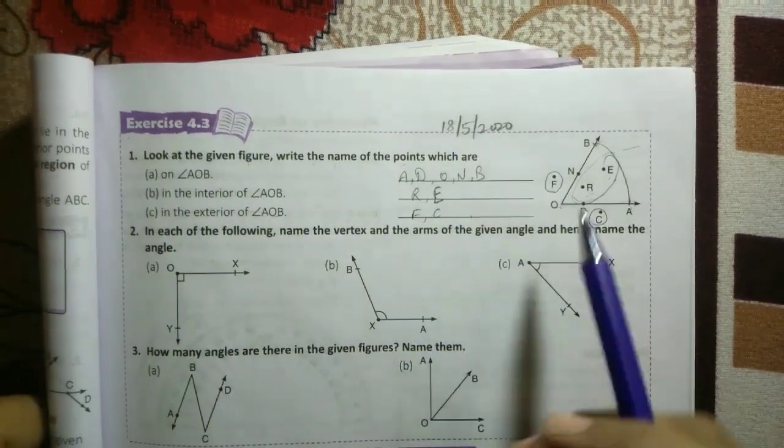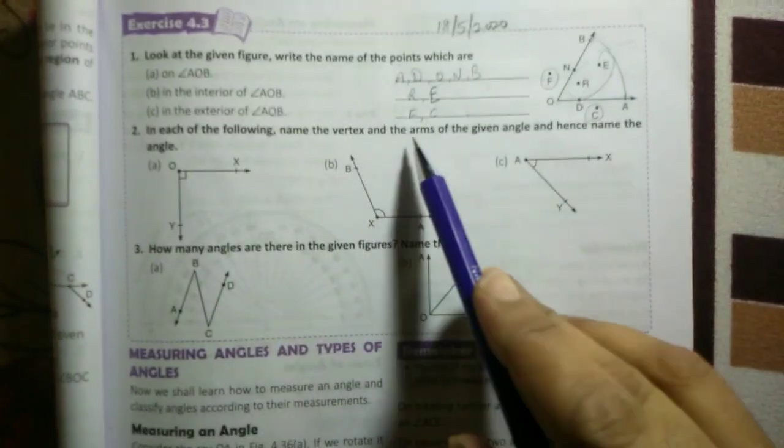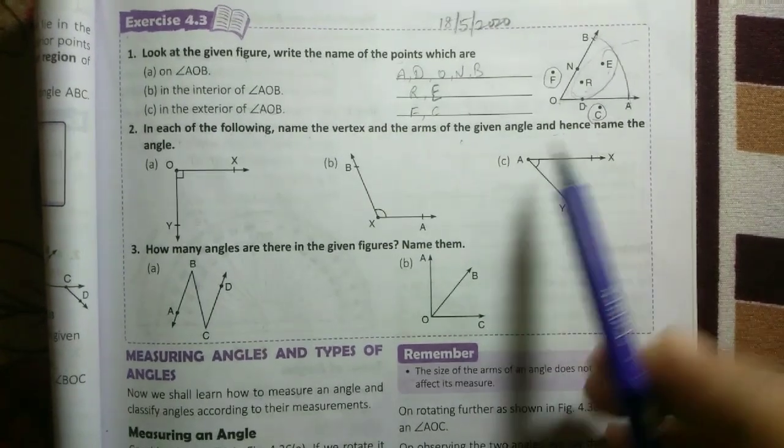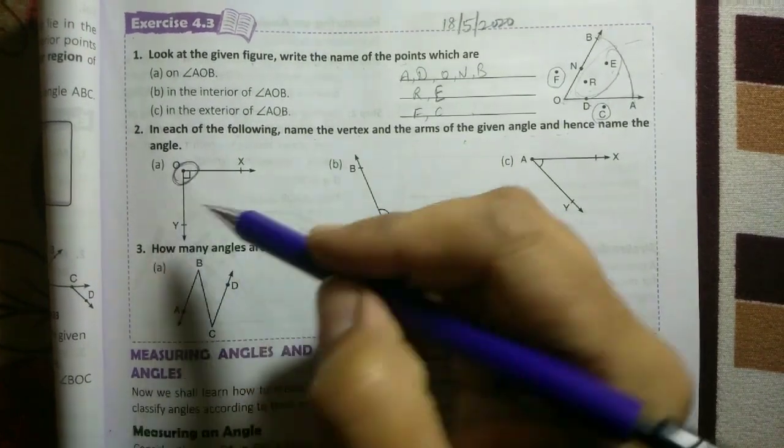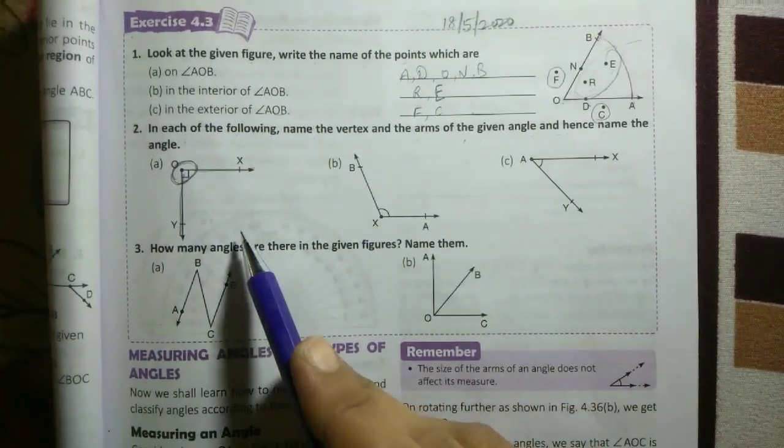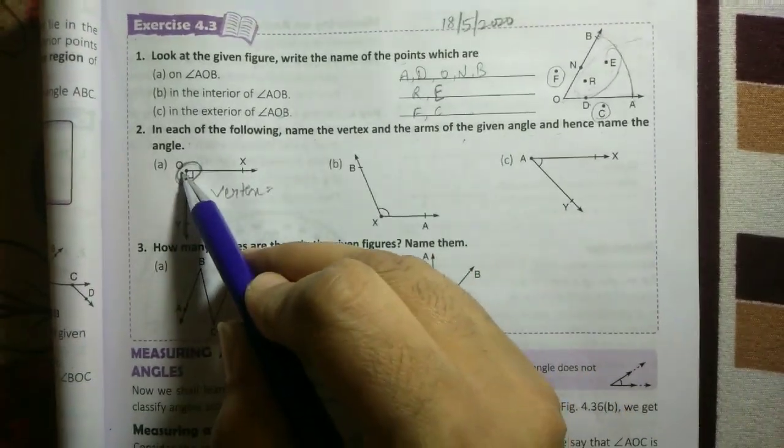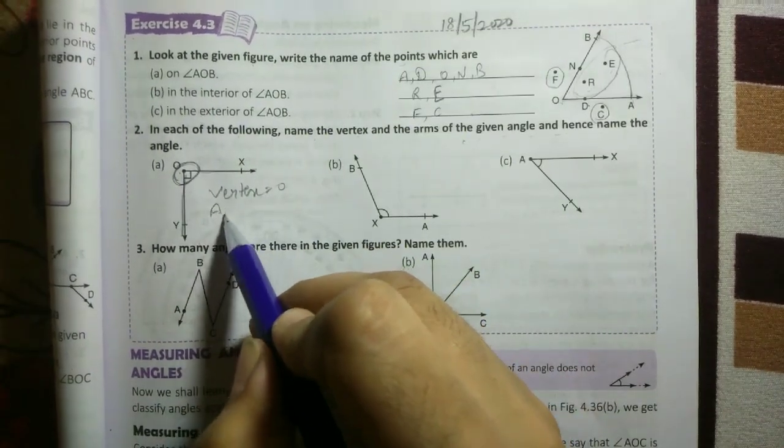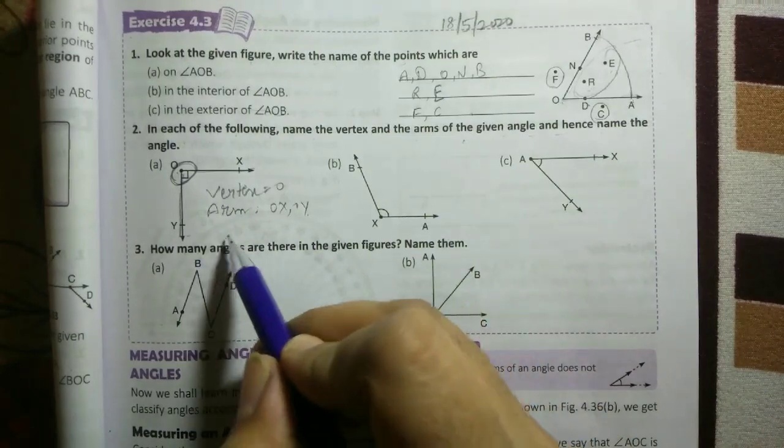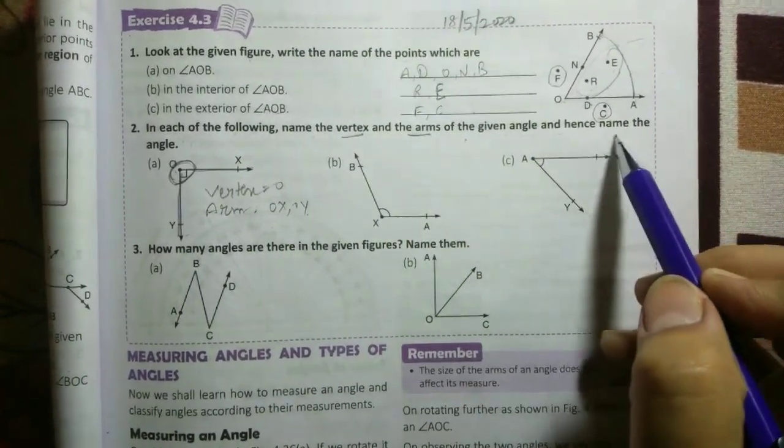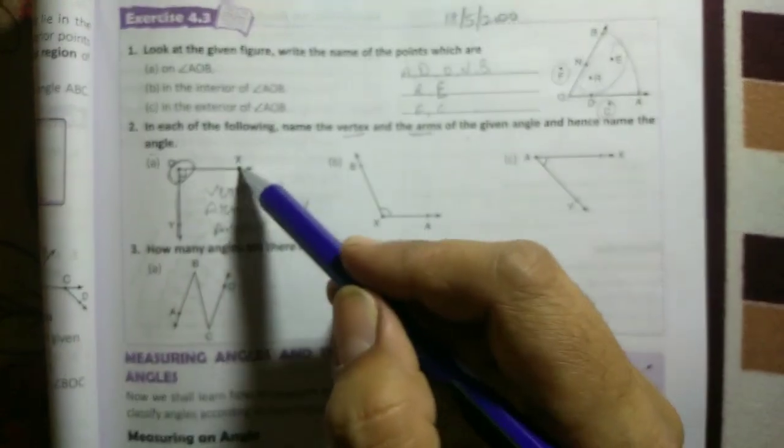Now turn to part second, question number two: in each of the following, name the vertex and the arms of the given angle and hence name the angle. Firstly, I tell you vertex is the initial point and arms are these. So here vertex is O, arms are OX and OY. The name of the angle can be angle YOX or XOY.